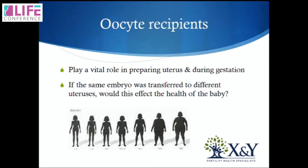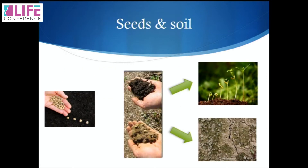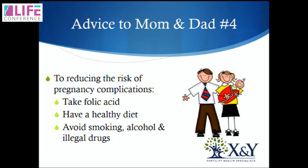When you have oocyte recipients, this is a big role for them. They may not be her eggs, but she can put a lot of effort into providing a good uterus. She plays a vital role in preparing that uterus for gestation. I explain it to patients this way: you've got some seeds — you can put them into healthy soil or poor soil. It's up to you to provide that soil. Healthy soil gives rise to healthy plants; bad soil means no plants, or unhealthy ones. Advice for mum and dad: to reduce the risk of pregnancy complications, take folic acid to reduce the risk of spina bifida, have a healthy diet, and avoid drugs, alcohol, and smoking.